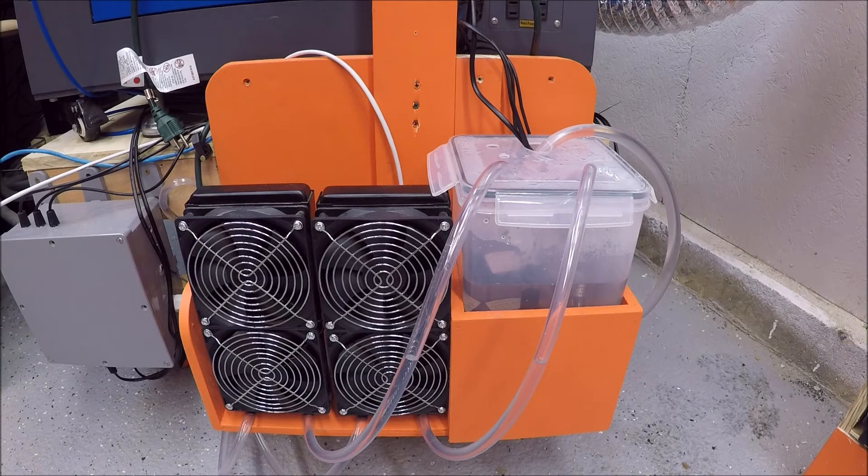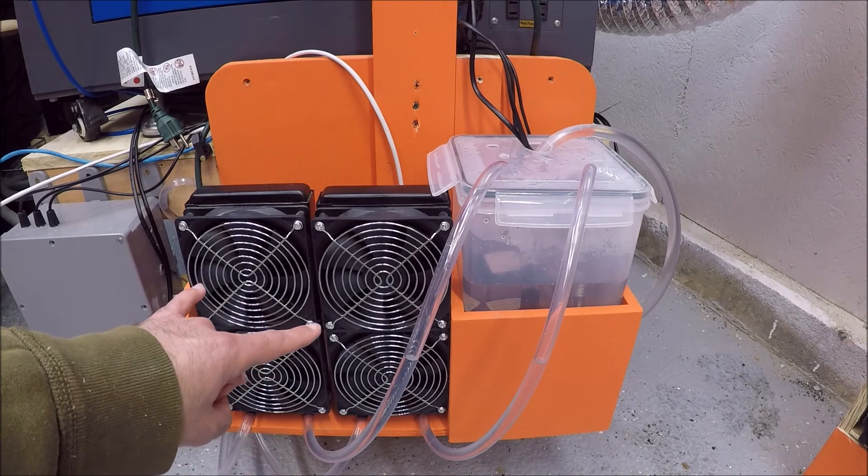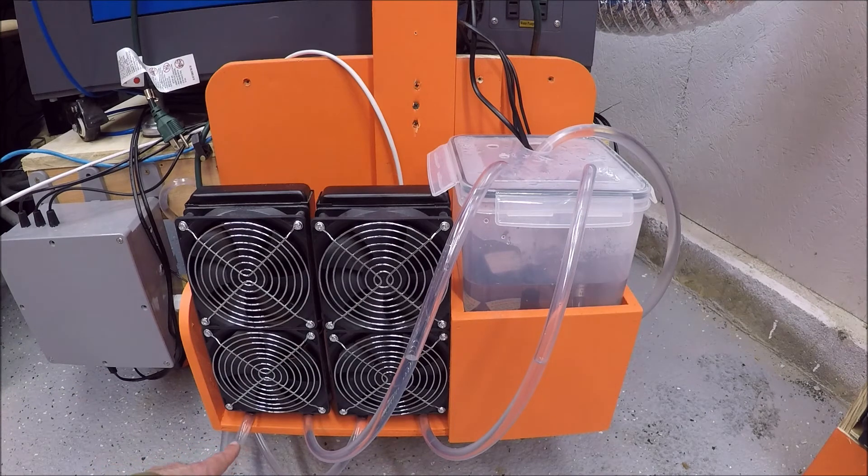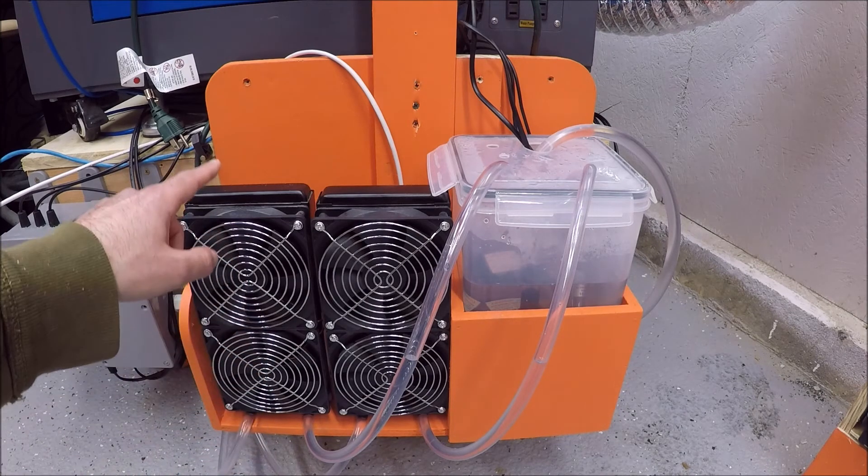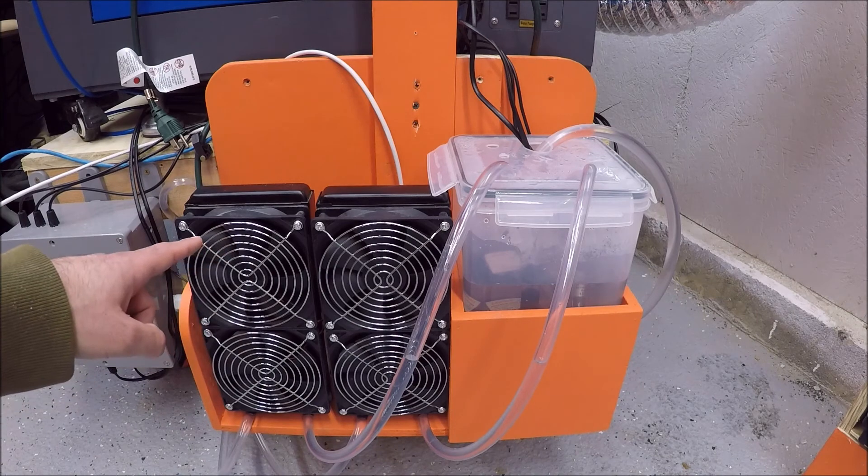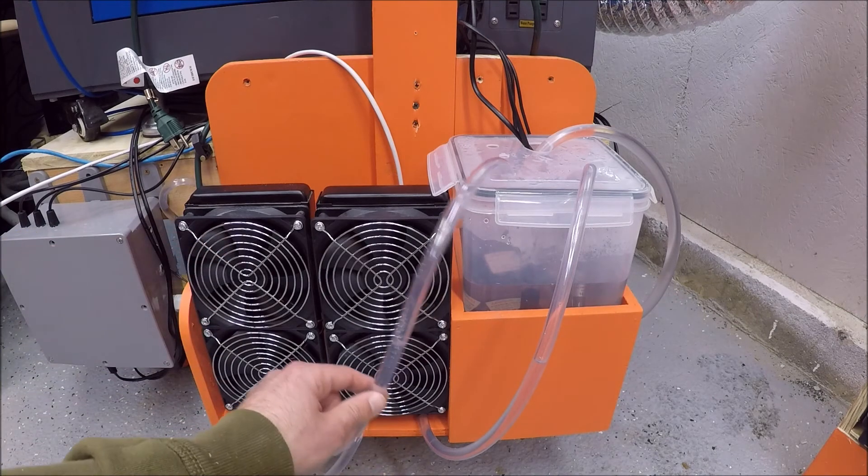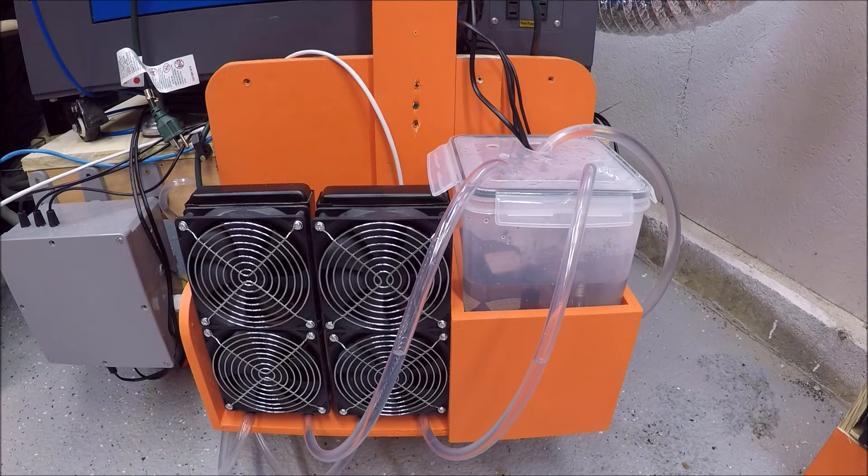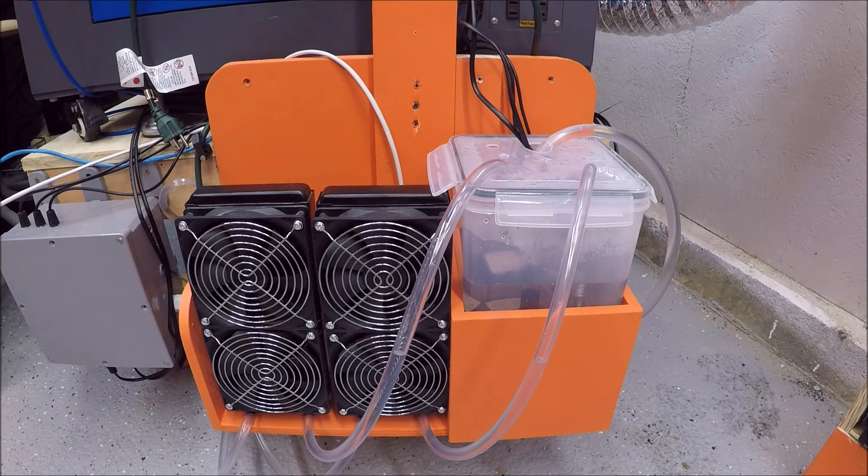So how this works is these are the fans that the controller turns on and off based on temperature. Warm water comes in through this side, goes through the radiator, the fans turn on, blow the cool air across it, cools down the water. It comes out this tube and goes back into the reservoir. And we've got two of them in parallel. So that's kind of what these are.